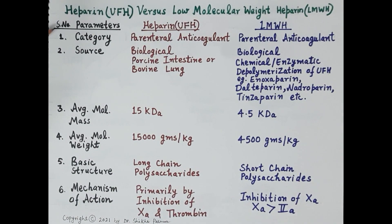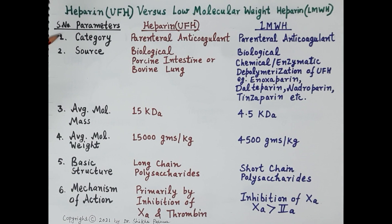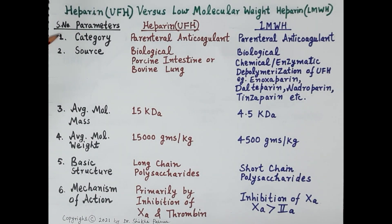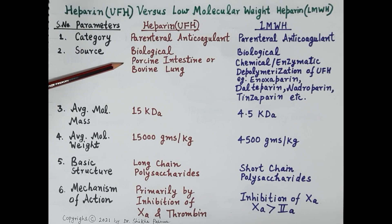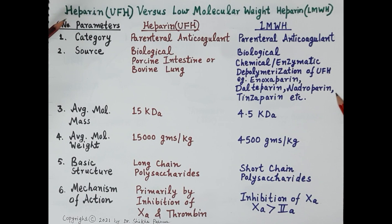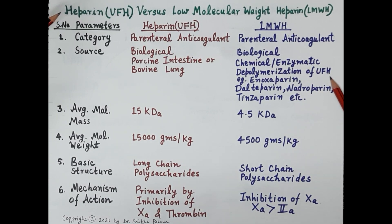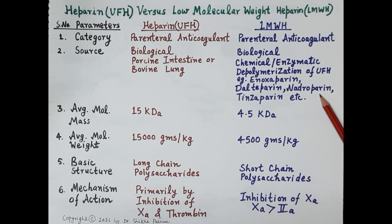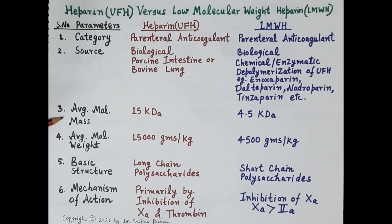First, regarding category: both unfractionated heparin and low molecular weight heparin are parenteral anticoagulants. Regarding source: both are obtained from biological sources. Unfractionated heparin is derived from porcine intestine or bovine lung, while low molecular weight heparin is obtained from chemical or enzymatic depolymerization of unfractionated heparin. Well-known examples of low molecular weight heparin include enoxaparin, dalteparin, nadroparin, and tinzaparin.